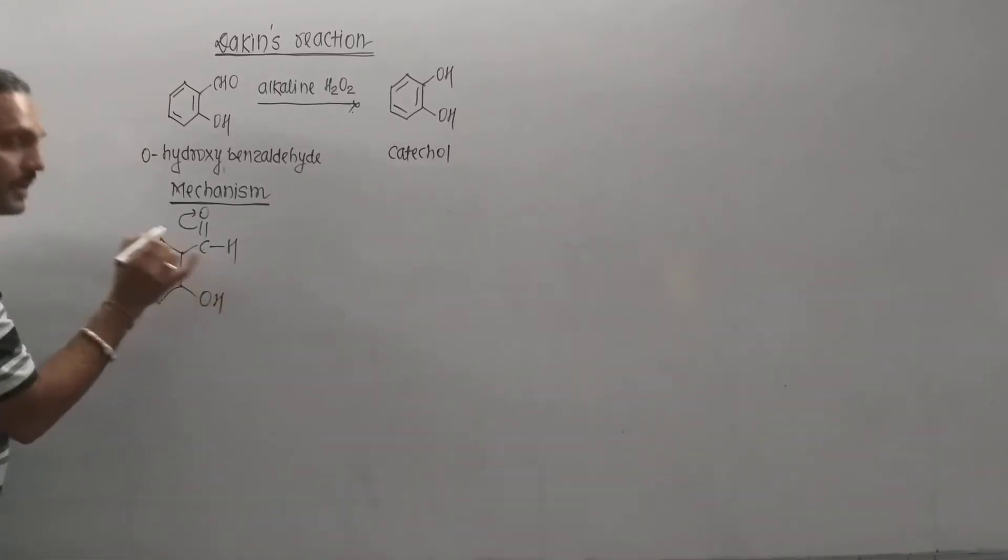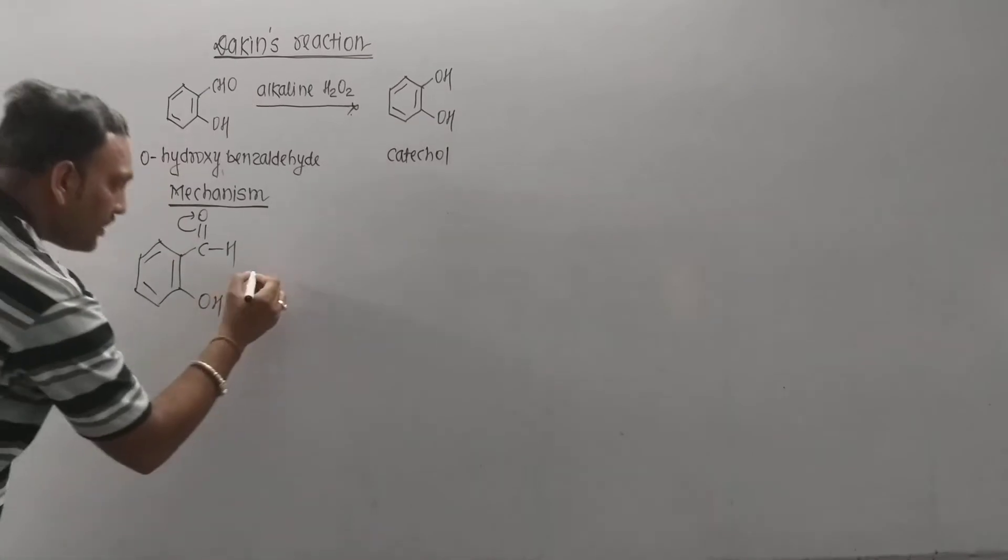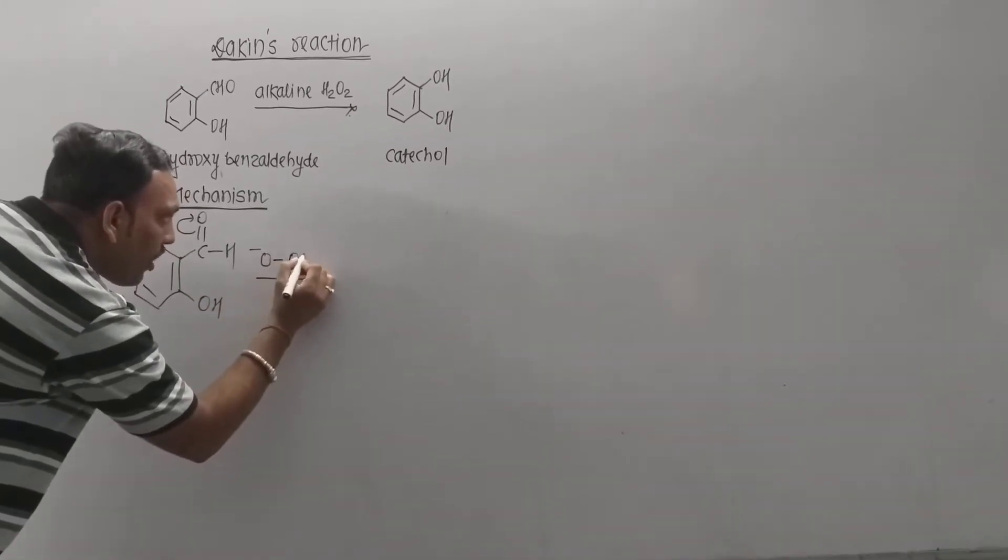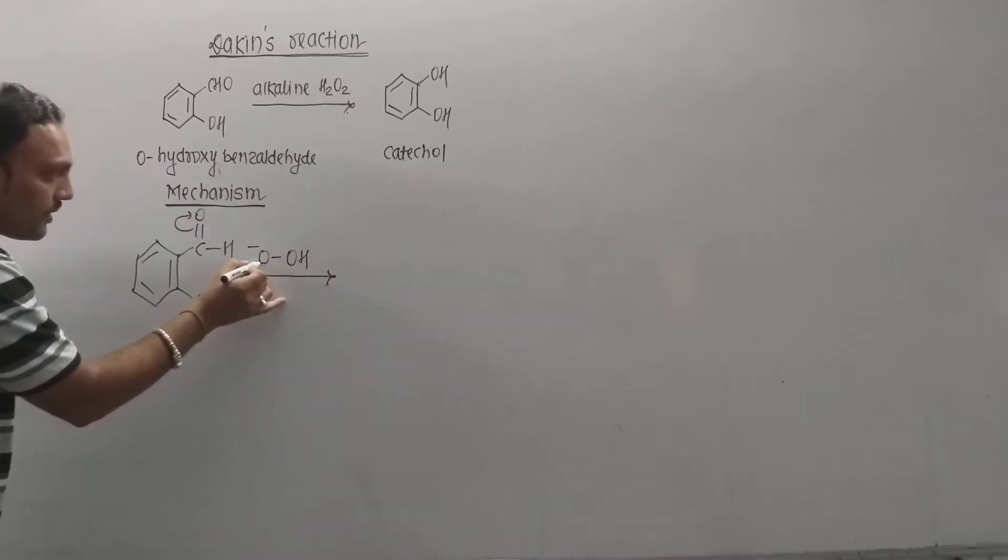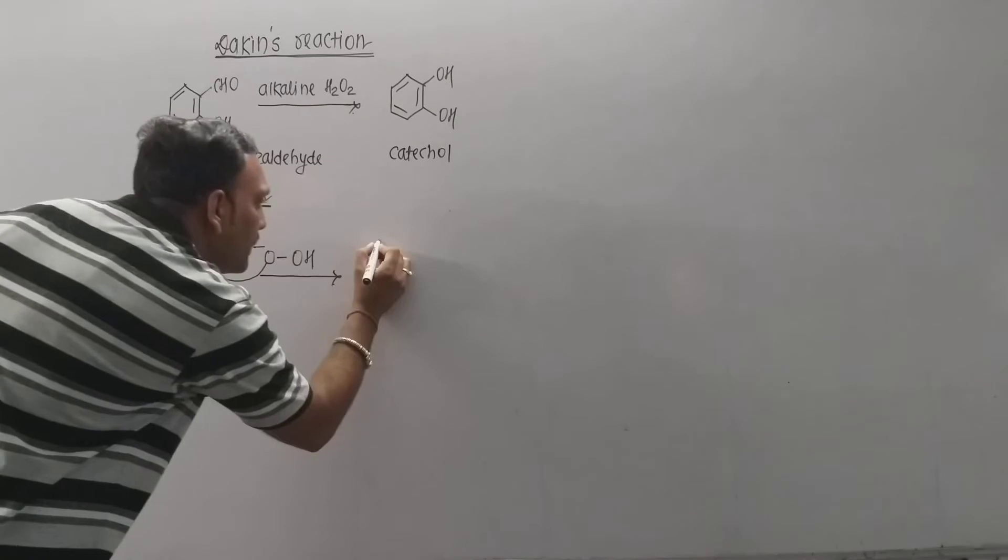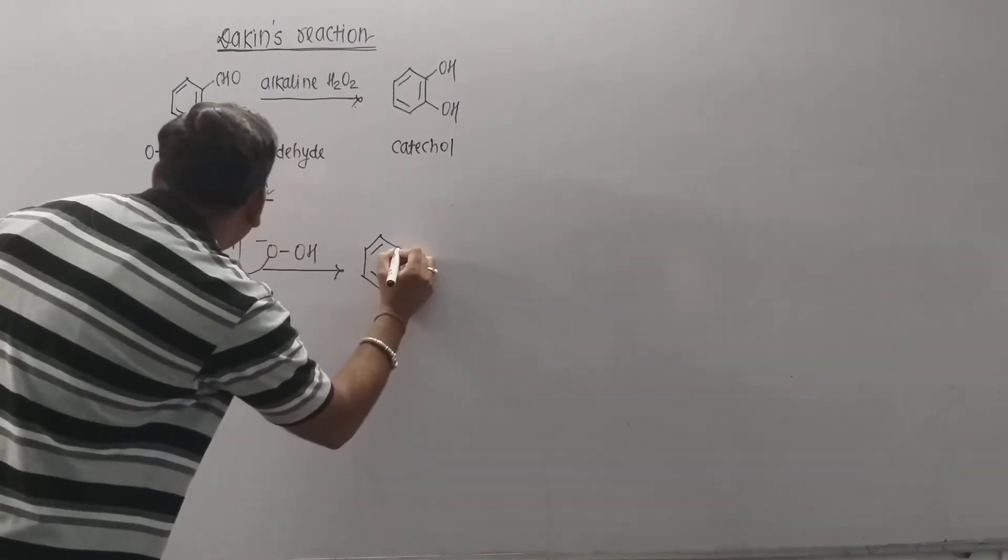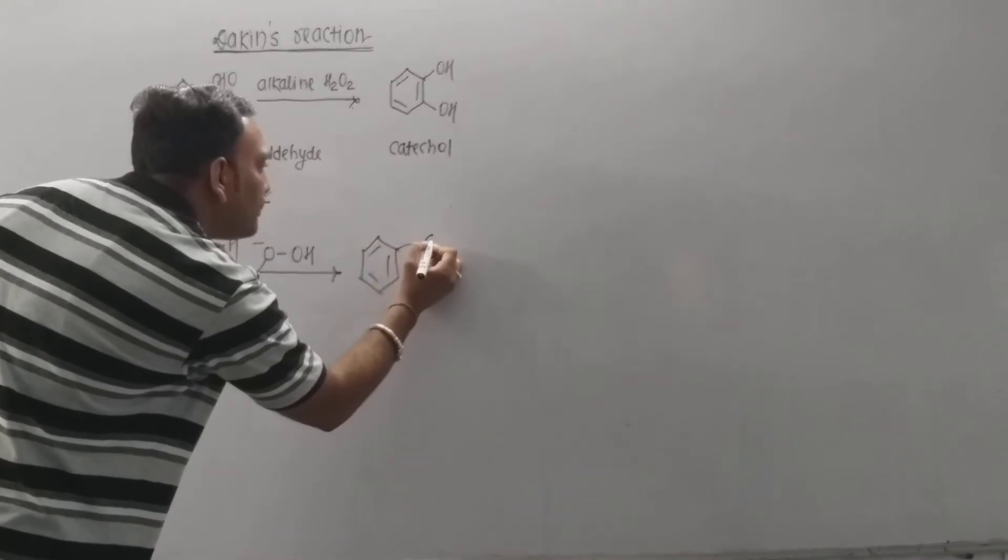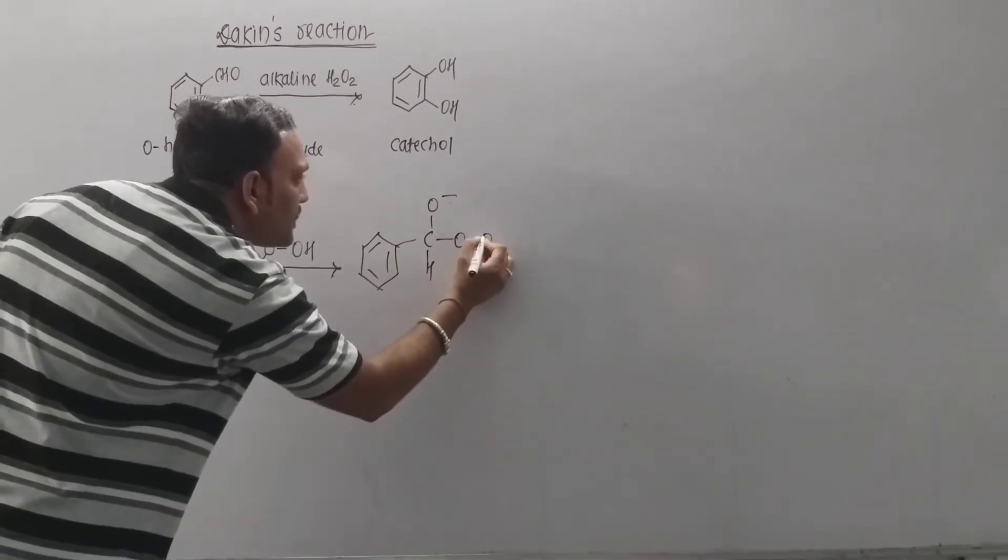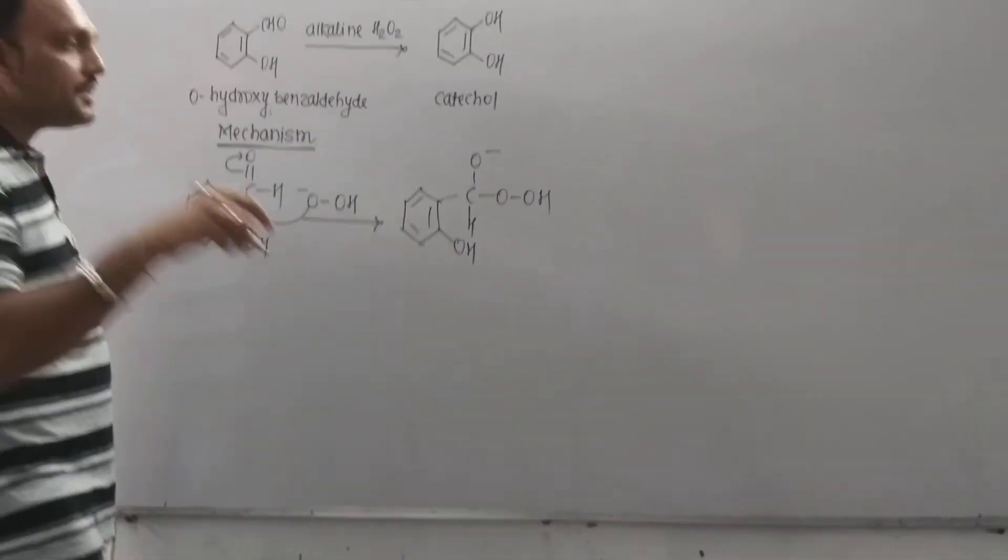So this carbon is susceptible for nucleophilic attack. Therefore, the nucleophile from hydrogen peroxide simply attacks at this carbon, which leads to the formation of an intermediate which can be written as... This is the new intermediate so-called it.